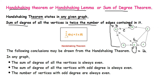The basic theorem states that the sum of degrees of all vertices V_i is equal to twice the number of edges E. The first conclusion drawn from the handshaking theorem is that in any graph, the sum of degrees of all the vertices is always even.